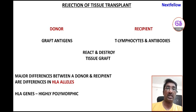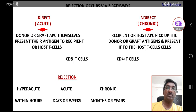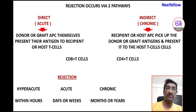This is in contrast to graft versus host disease, where the vice versa takes place. The major differences between a donor and recipient are the differences that exist in HLA alleles. HLA stands for human leukocyte antigen, and these HLA genes are highly polymorphic, meaning they show significant variations.